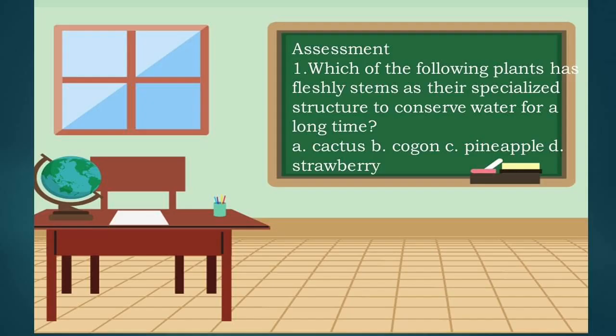Assessment Question 1: Which of the following plants has fleshy stems as their specialist structure to conserve water for a long time? A. Cactus, B. Cogon, C. Pineapple, D. Strawberry. If your answer is A, then you are correct.